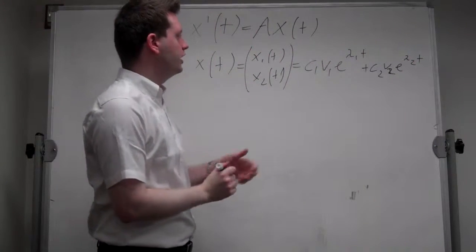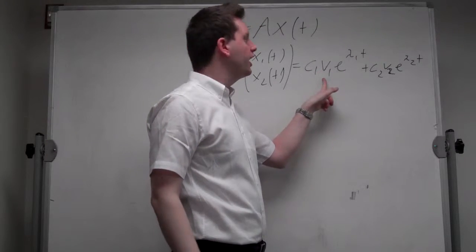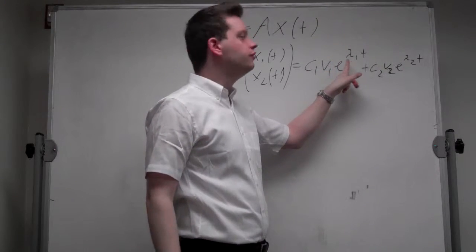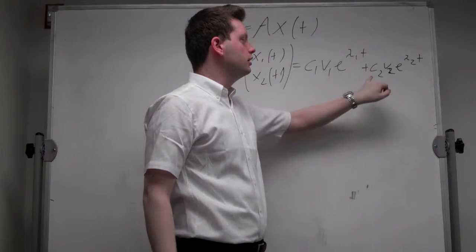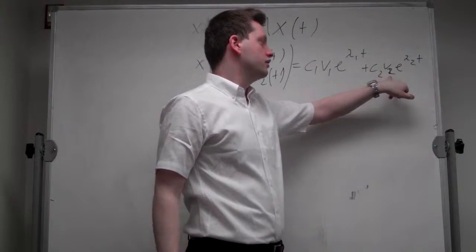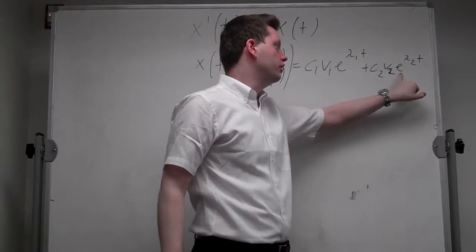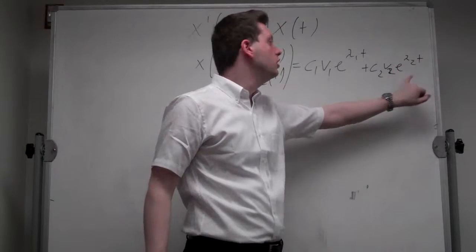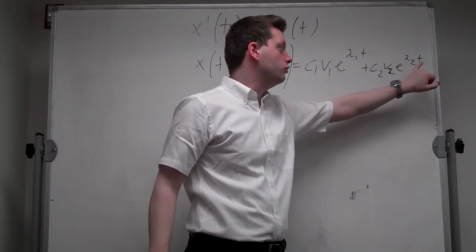So it's simply a constant times the first eigenvector times e to the power of the eigenvalue times t, plus the second constant times the second eigenvector times e to the second eigenvalue times t.